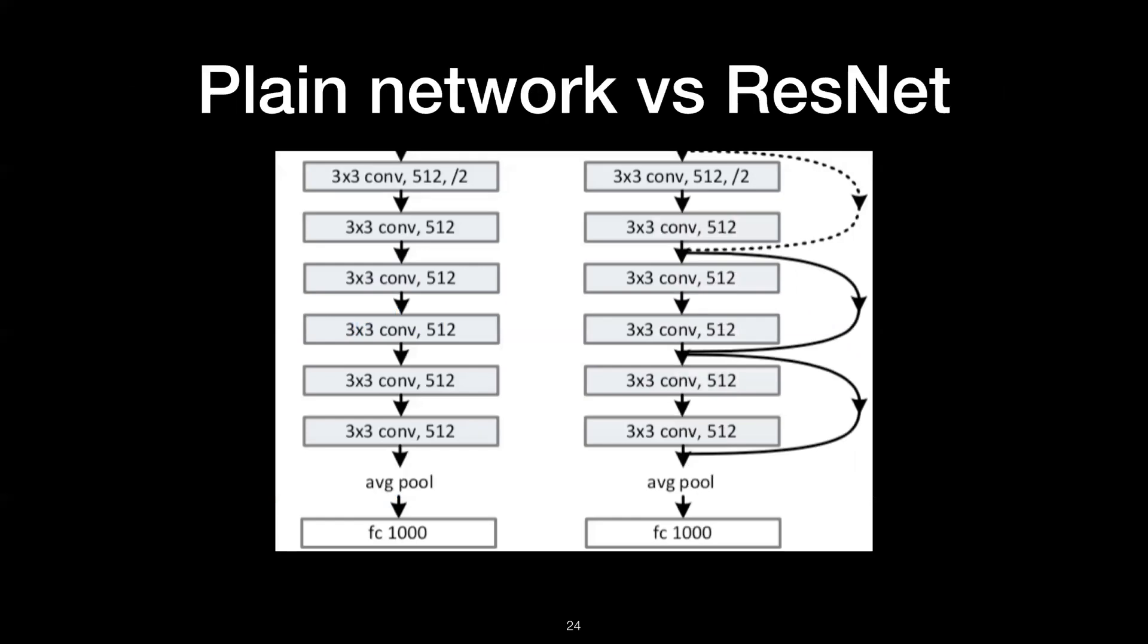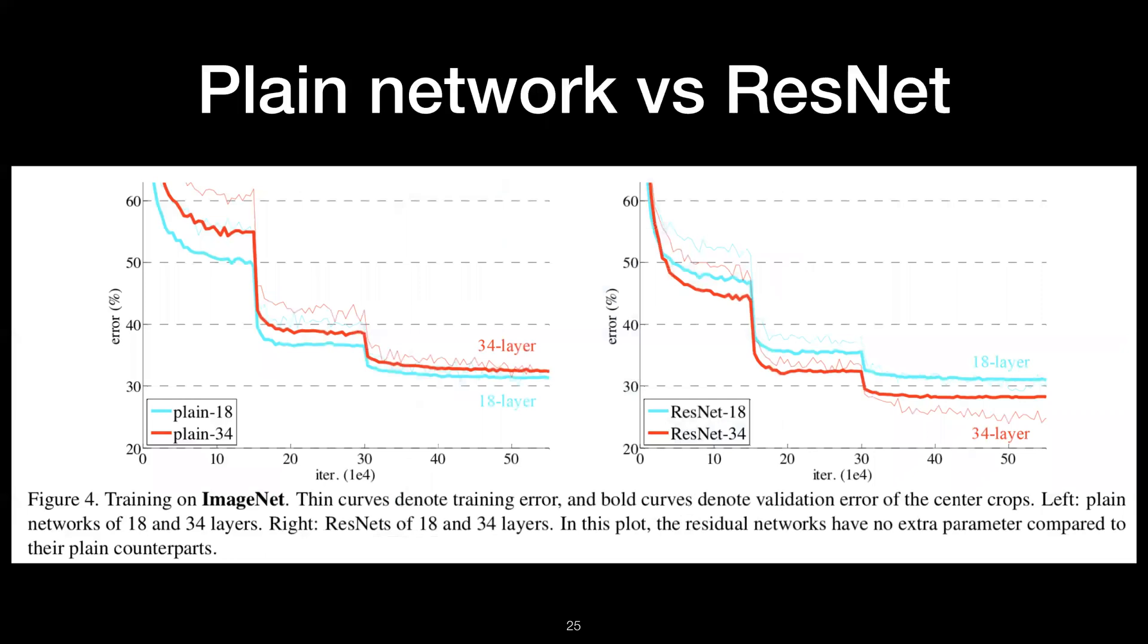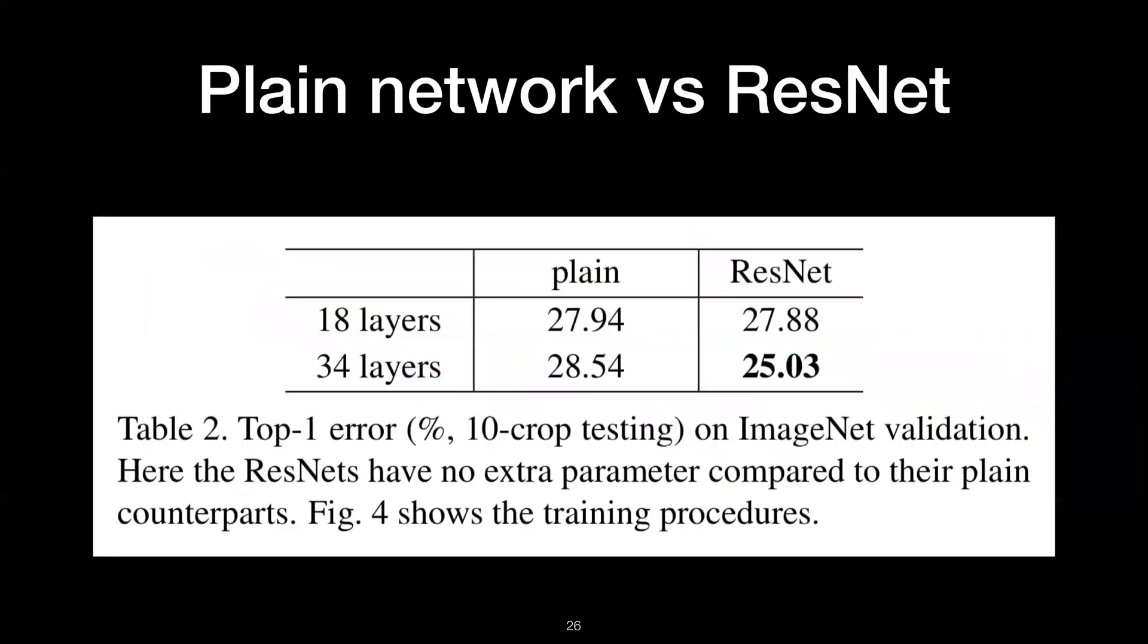This is the partial screenshot of the plain network and ResNet. As you can see, all of the configuration is the same except for the identity connection and the dotted line represents the projection shortcuts. While 34 layer plain networks achieve higher error rate than the 18 layer plain network, increasing the number of layers does not hurt the validation accuracy when using ResNet, and it solves the degradation problem.